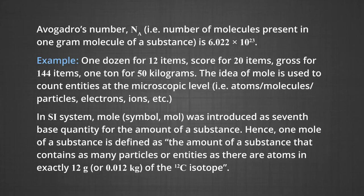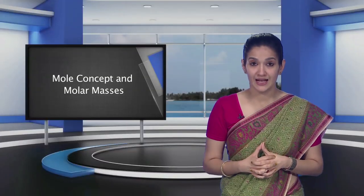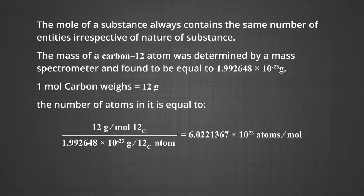In the SI system, mole (symbol: mol) was introduced as the seventh base quantity for the amount of a substance. One mole of a substance is defined as the amount of substance that contains as many particles or entities as there are atoms in exactly 12 grams (0.012 kg) of the carbon-12 isotope. A mole of a substance always contains the same number of entities, irrespective of the nature of the substance.